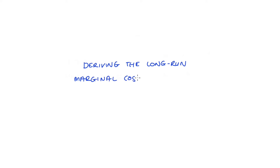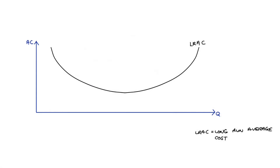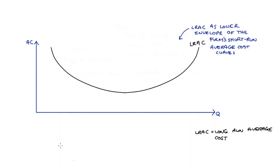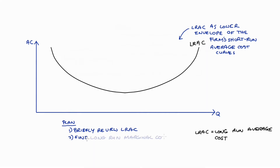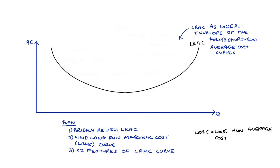Hi everyone. In this video, I'm going to discuss deriving our long-run marginal cost curve. In order to understand the derivation of our long-run marginal cost curve, we first need to understand the derivation of our long-run average cost curve, which I've drawn here as the lower envelope of the firm's short-run average cost curves. The plan in this video is to firstly briefly review the derivation of our long-run average cost curve, then find our long-run marginal cost curve, and lastly discuss two features of the long-run marginal cost curve. If you're already comfortable with deriving the long-run average cost curve, you can skip straight to the second part. All of these parts are timestamped in the description.